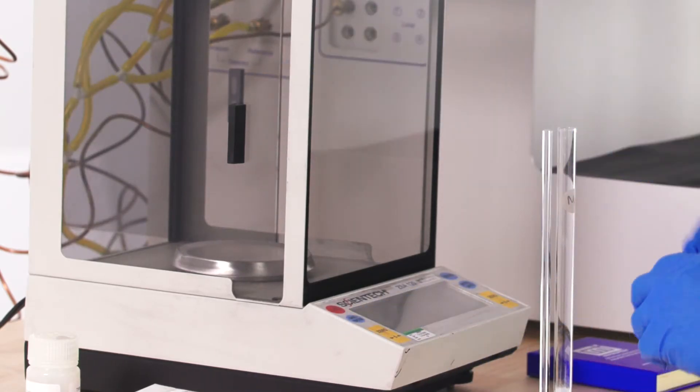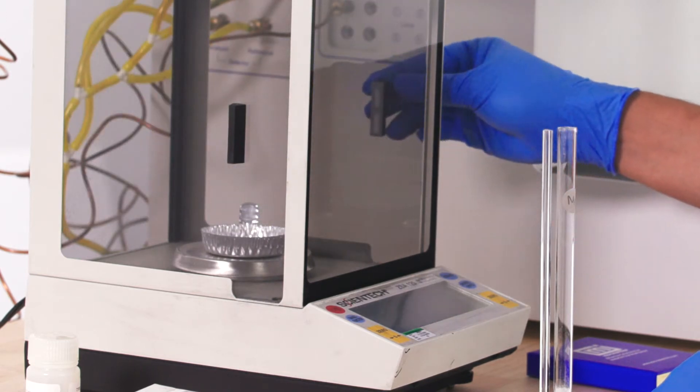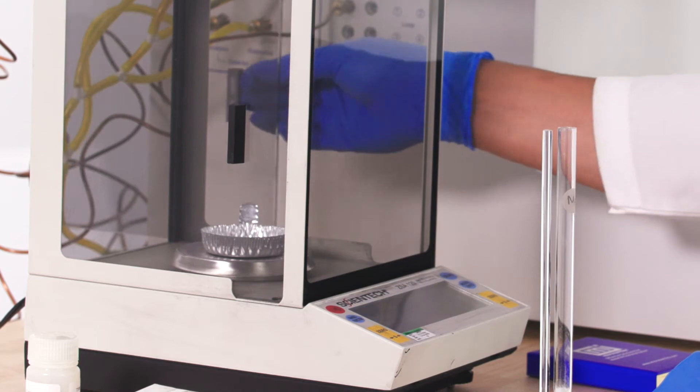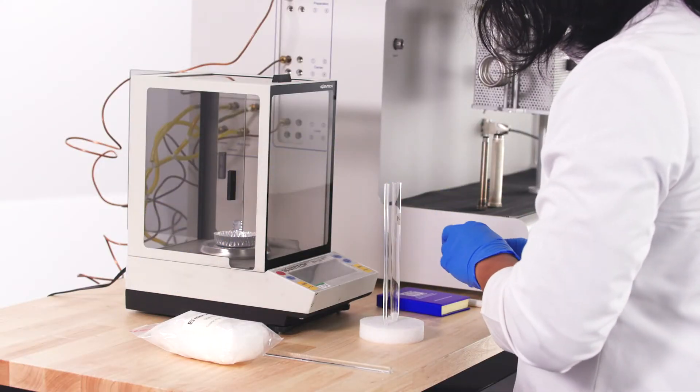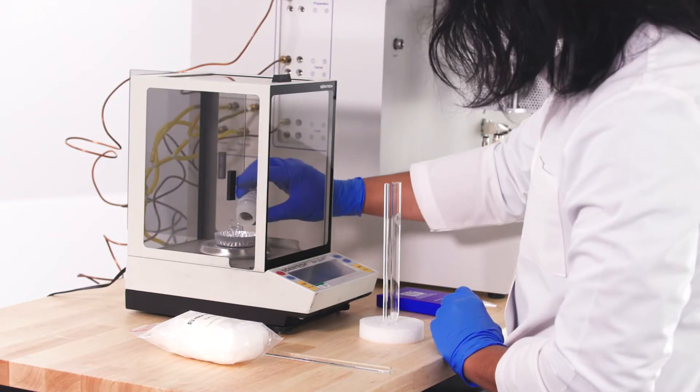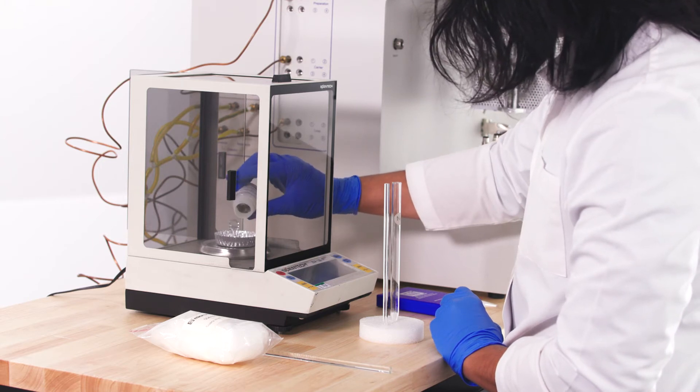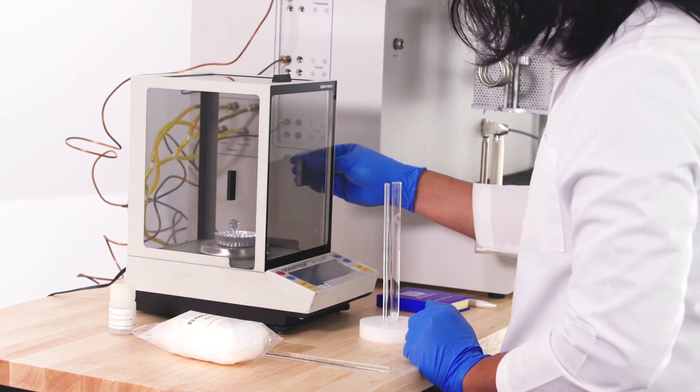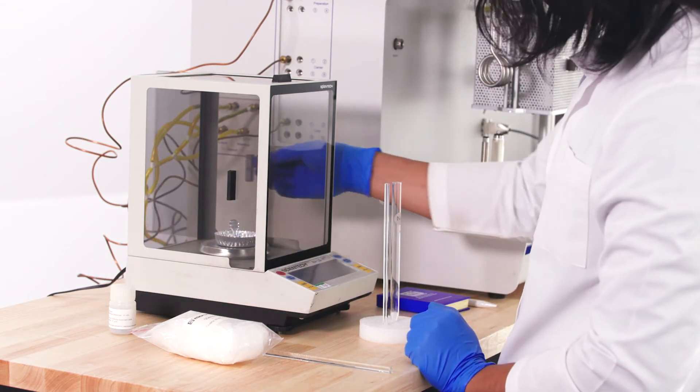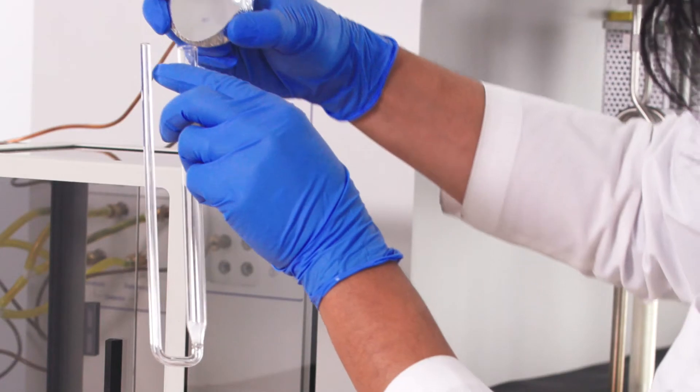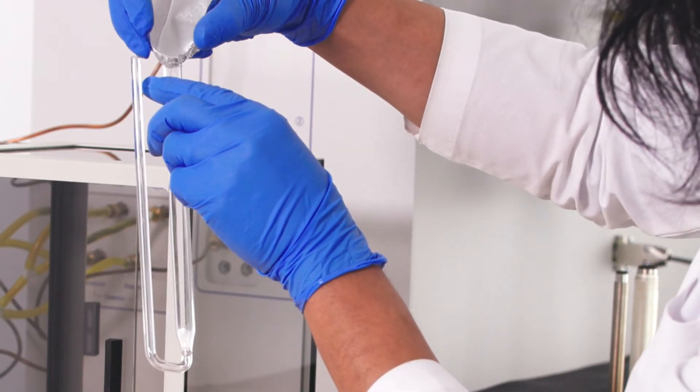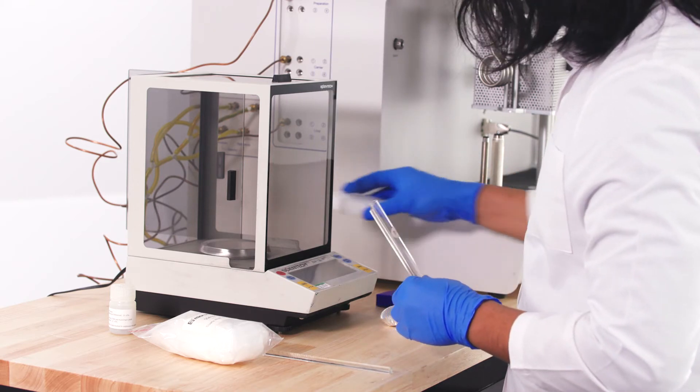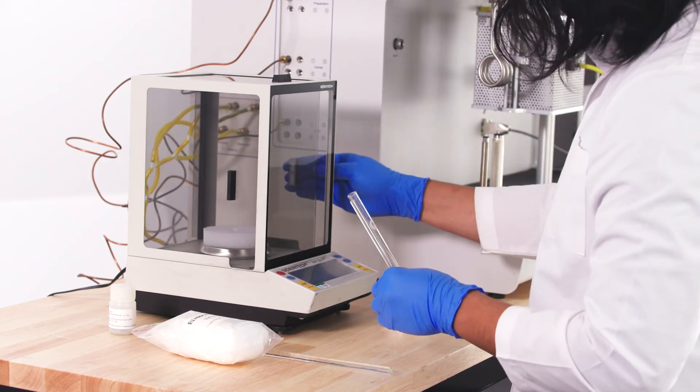Measure between 0.5 to 1 gram of platinum alumina and transfer into the sample tube. Re-weigh the mass of the sample tube with the sample.